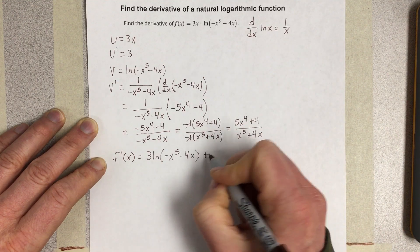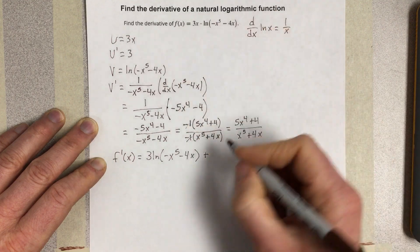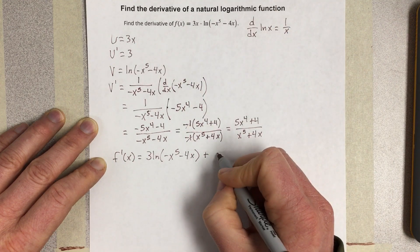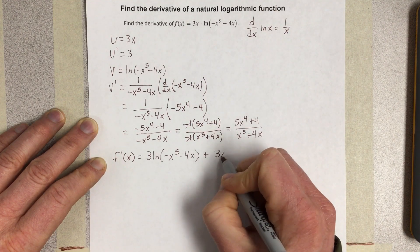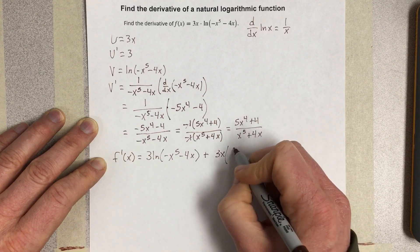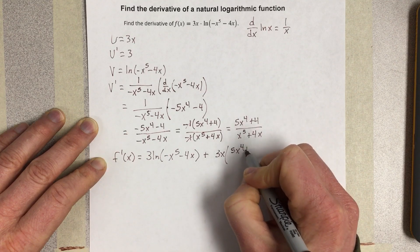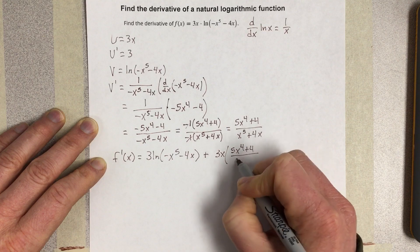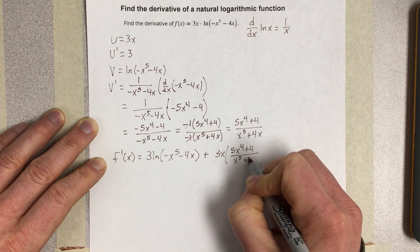So I'm doing the second part of the product rule, and I'm taking u, which is 3x, and I'm going to multiply it times 5x to the 4th plus 4 over x to the 5th plus 4x.